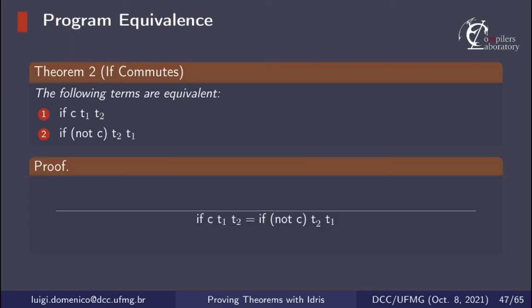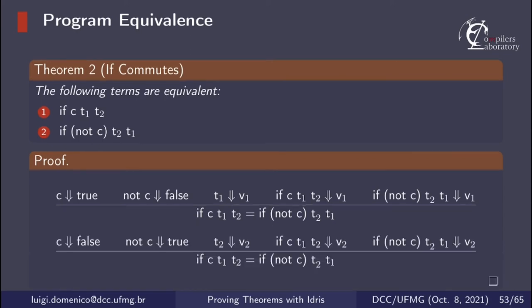The proof has two cases. In the first case, c reduces to true, consequently not c reduces to false, and both terms reduce to the evaluation of t1. In the second case, c reduces to false, not c reduces to true, and both terms reduce to the evaluation of t2.